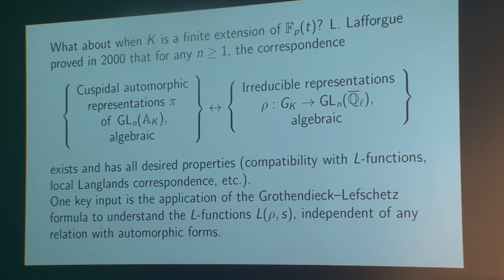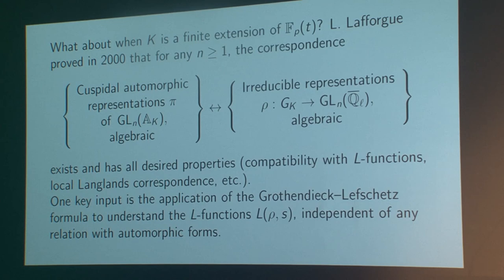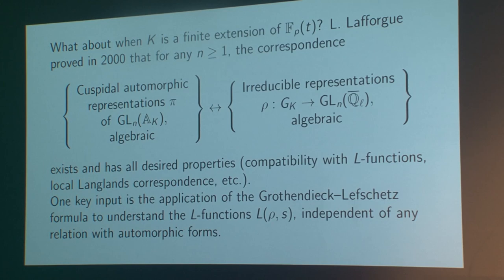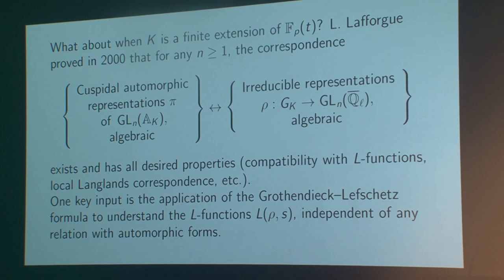One reason Lafforgue was able to do that is that many tools are available in the function field context that aren't available for number fields. One of the most significant is that an irreducible algebraic representation of the Galois group of a global field k of positive characteristic can be realized as a local system on the smooth curve whose function field is k. Once you do that, you have access to Grothendieck's theory of étale cohomology. You can compute the L-function in terms of the étale cohomology of your Galois representation ρ using the Lefschetz trace formula. That's a powerful tool because one way to prove a Galois representation ρ is automorphic is by getting a handle on the various L-functions associated to it.